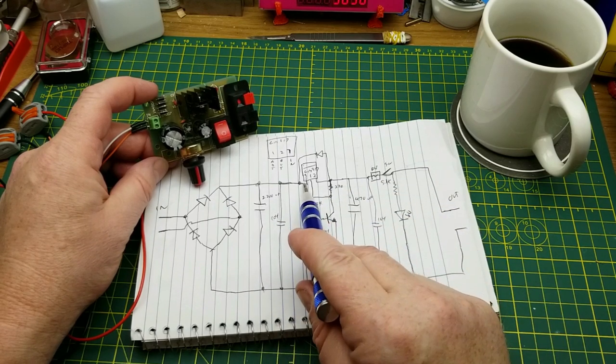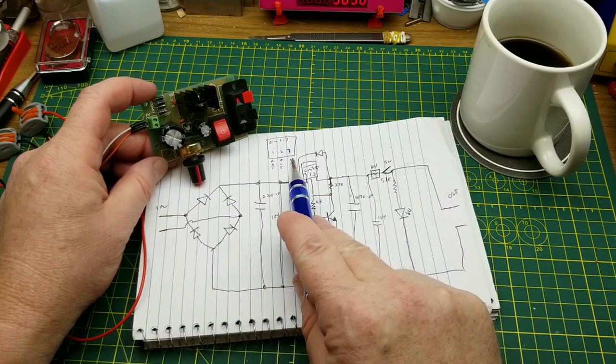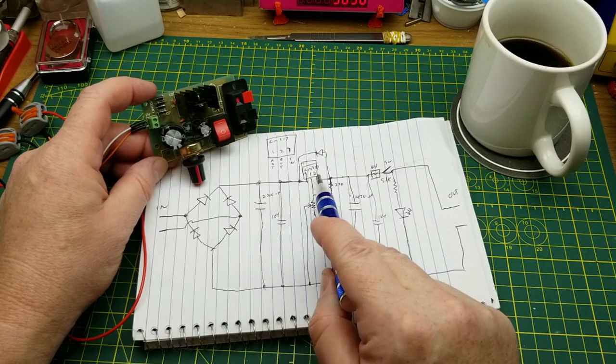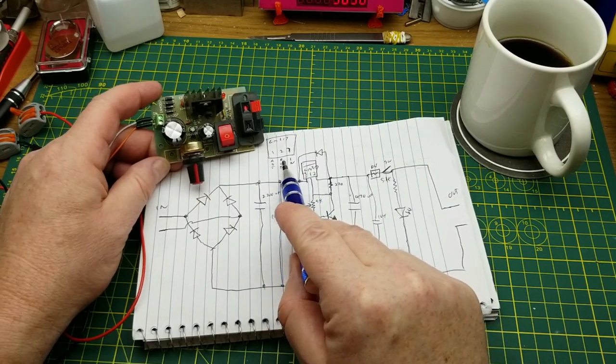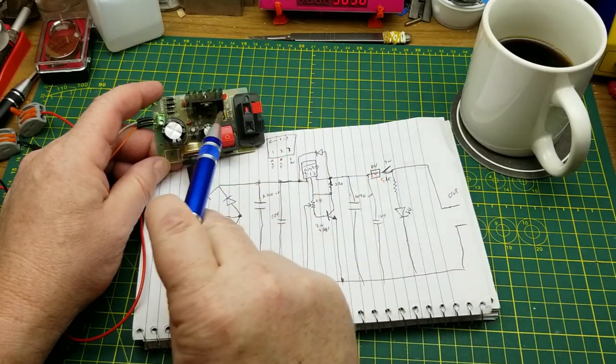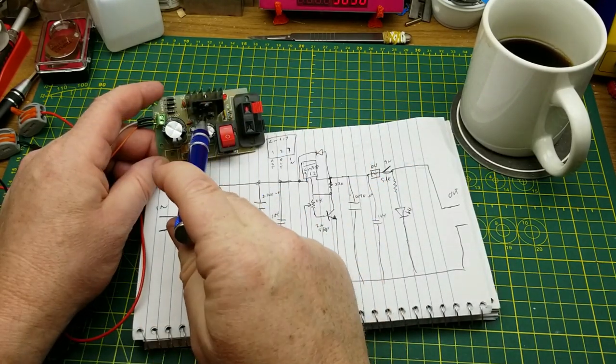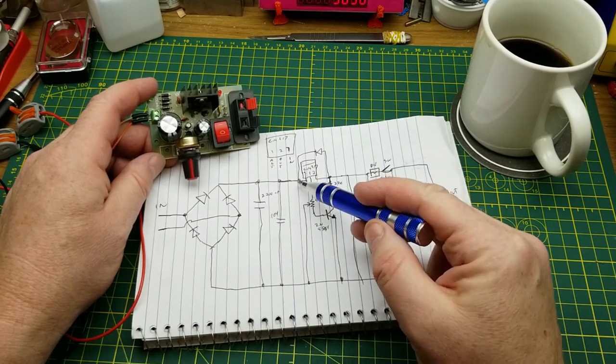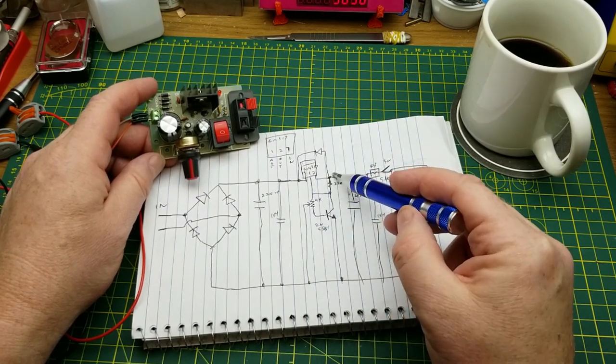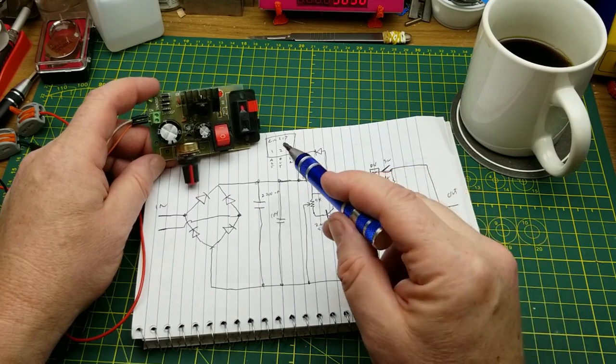That goes into pin three of the LM317, which is the input pin. I drew them more conveniently here - this is how they really are laid out. Pin one is on that side, pin two is in the middle, pin three is on that side physically, but just for convenience I put them like that. There's a reverse protection diode across the thing just for good measure.